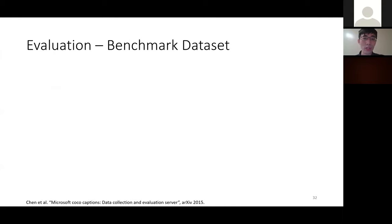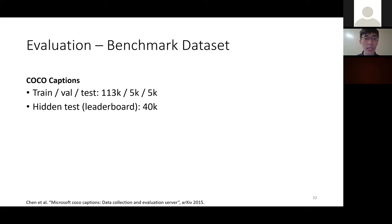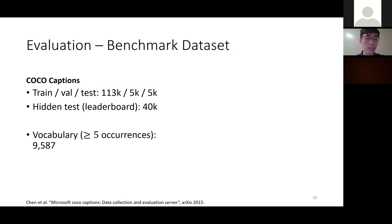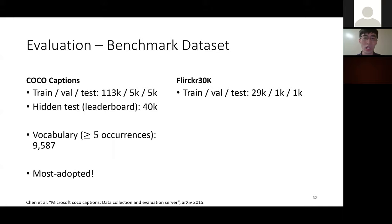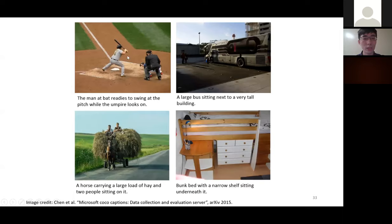The most popular benchmark for image captioning is COCO Captions, which contains over 100K images for training and 5,000 each for validation and testing, with 40,000 images held out as a hidden test set for leaderboard purposes. The vocabulary is over 9,000 words with at least five occurrences each. Another commonly used dataset is Flickr30K, which has significantly fewer images and a smaller vocabulary.